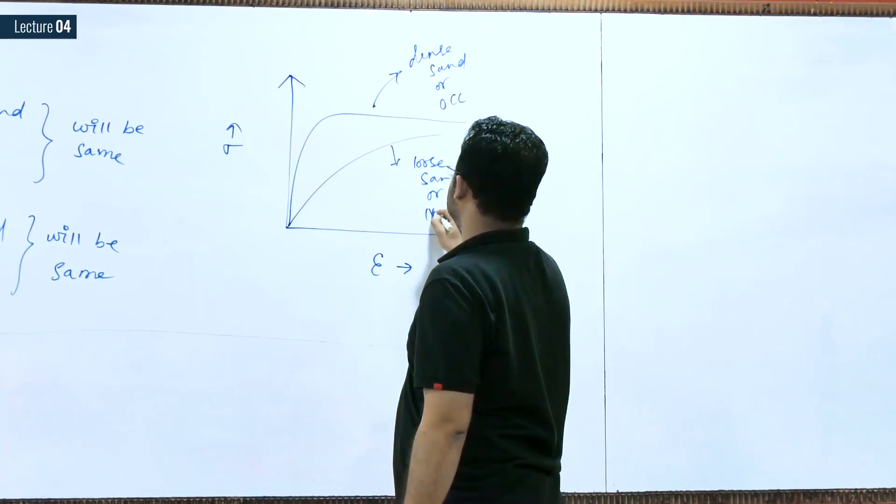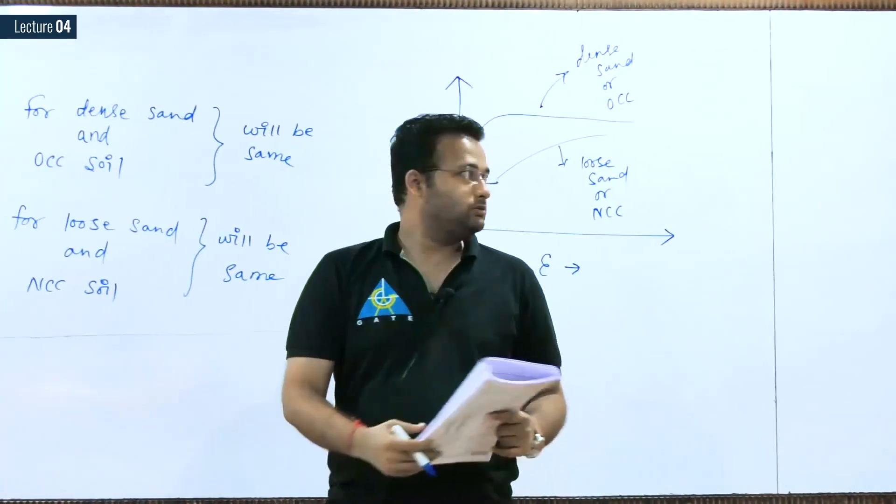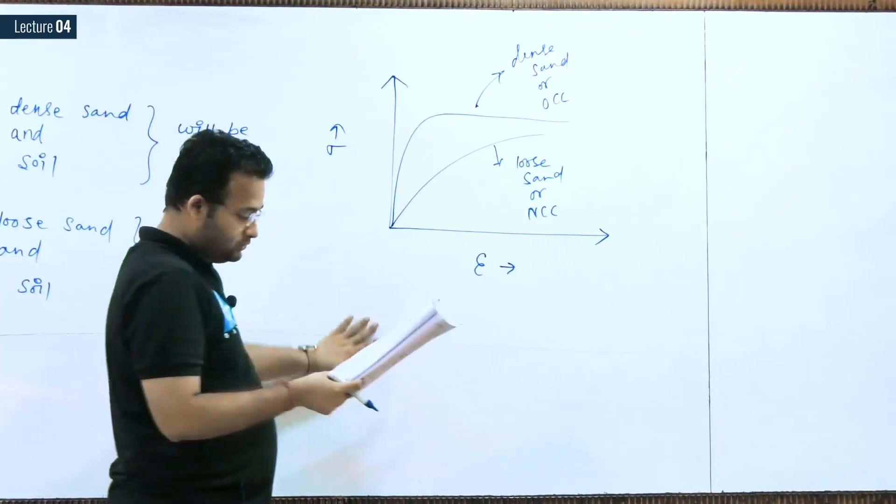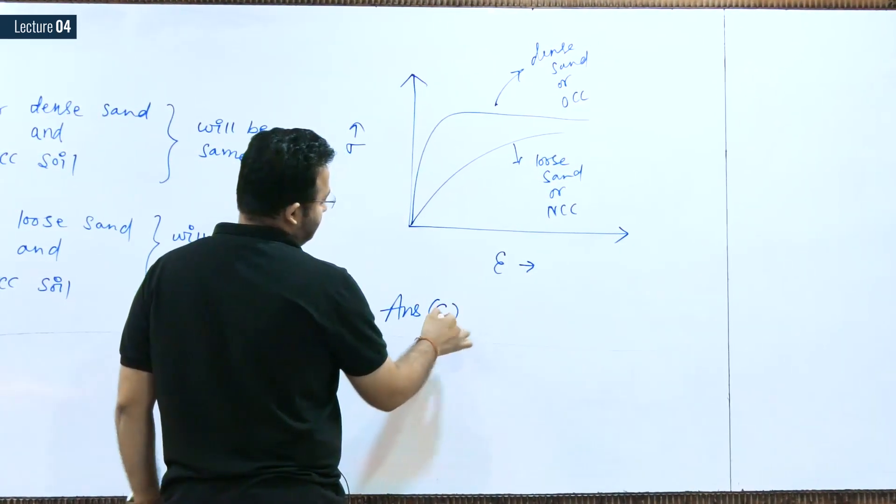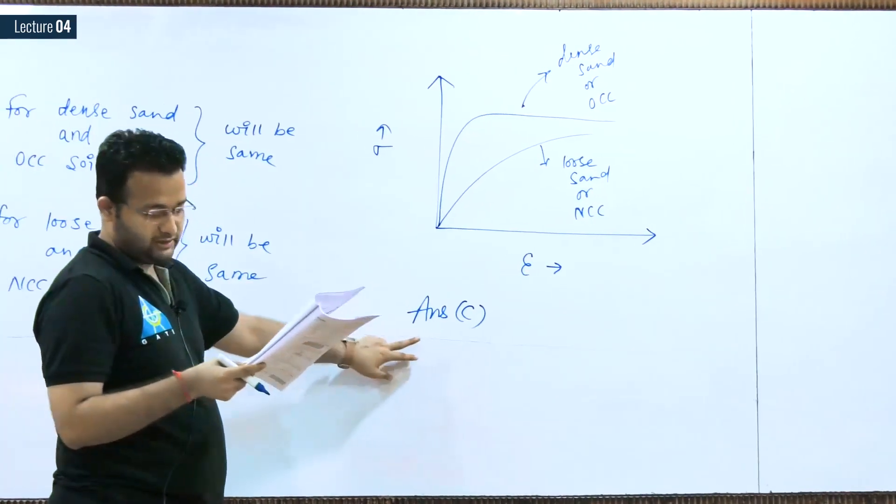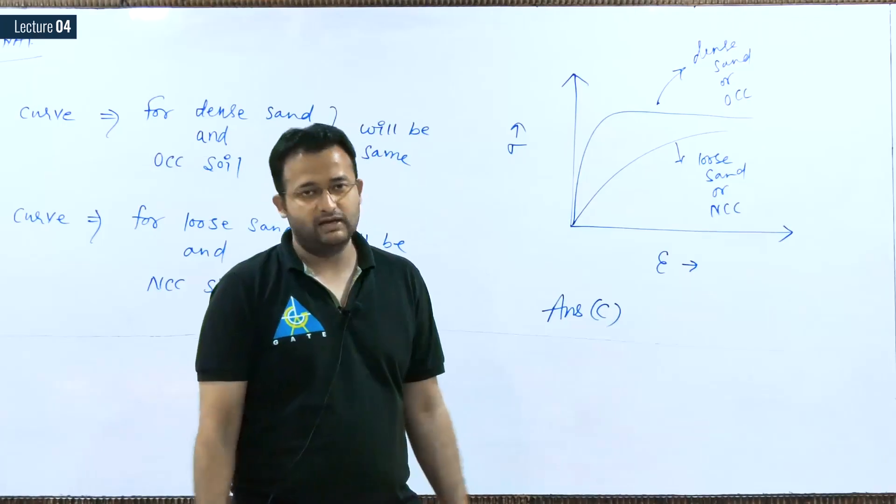Right now just for information you can write dense sand or OCC, and here you can write loose sand or NCC. For this we can have this type of curves. These are the curves, so this is matching with option number C. We are matching with option number C. So correct answer for this problem is option number C. Thank you.